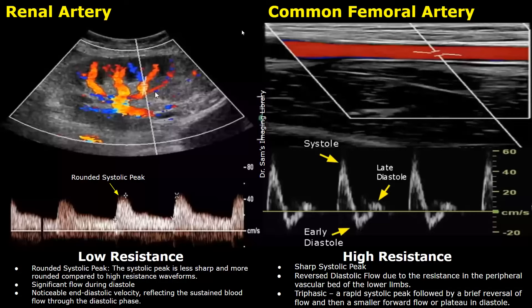Blood flow to vital organs such as the kidney or brain will have low resistance waveforms, because these organs are vital and require a significant amount of blood. You can remember that these organs will have low resistance waveforms.